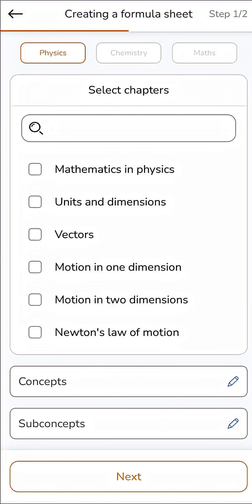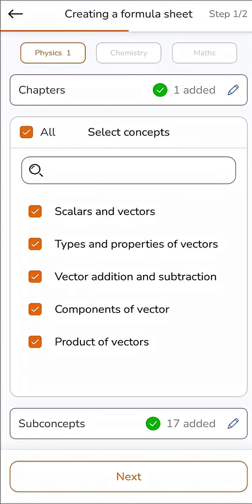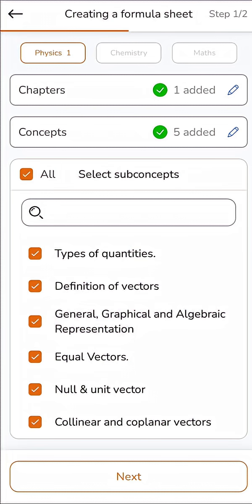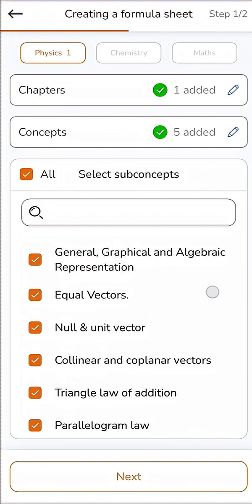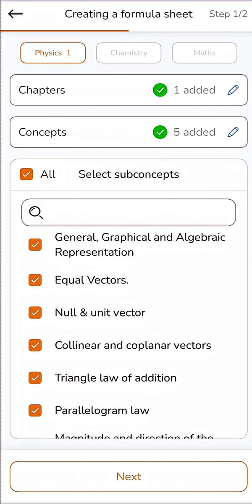Then select the chapter. Let's say we select the chapter called Vector. And below that, you'll get concepts and sub-concepts that you want to include in your formula sheet. Basically, you're building your own sheet based on exactly what you want to revise. Once you're done selecting, tap next.